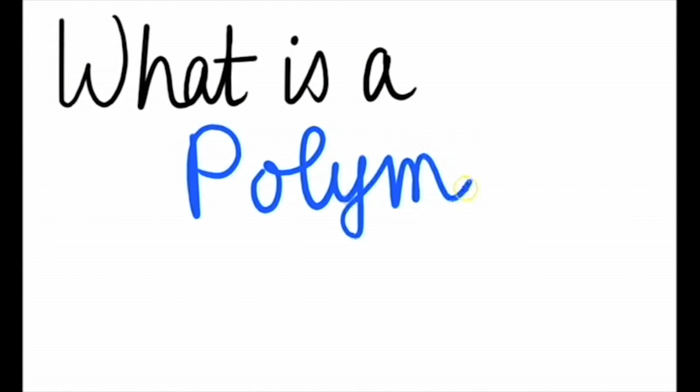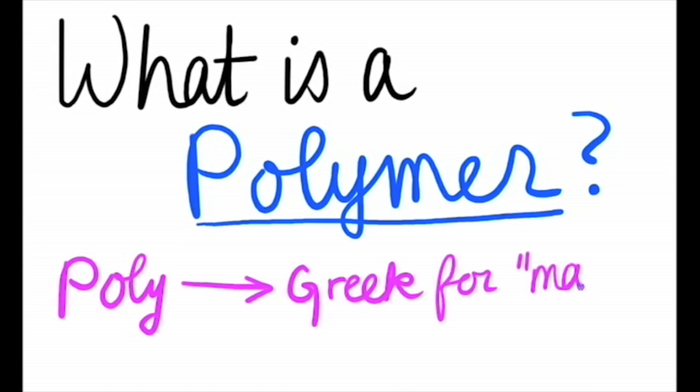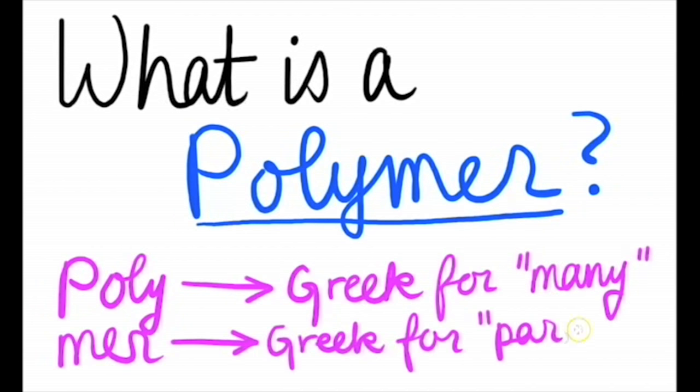So first things first, what exactly are polymers? We can look to the word itself to help us figure this out. We can divide the word into two parts: poly, which is Greek for many, and mer, which is Greek for parts.